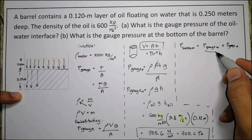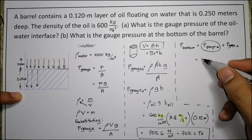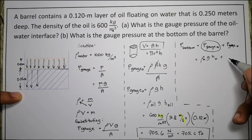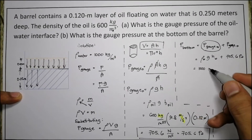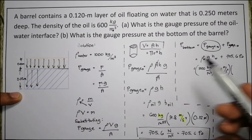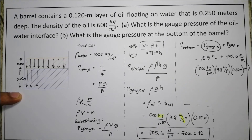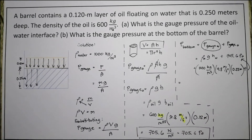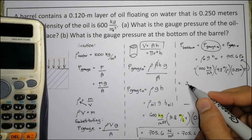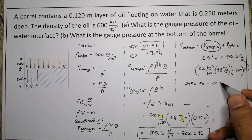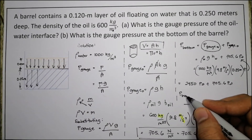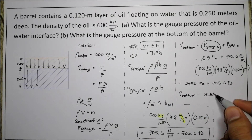The gauge pressure of water is density of water times gravity times height of water: 1,000 kg/m³ times 9.8 m/s² times 0.25 meters, plus 705.6 pascals. That gives 2,450 pascals plus 705.6 pascals, leaving a total pressure at the bottom equal to 3,155.6 pascals.